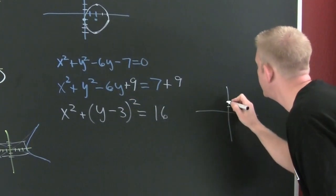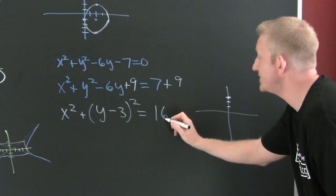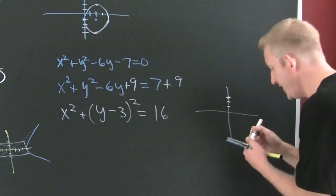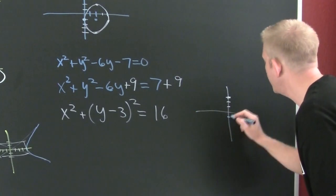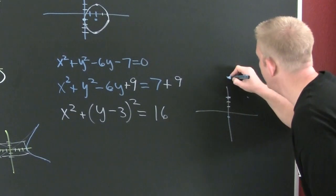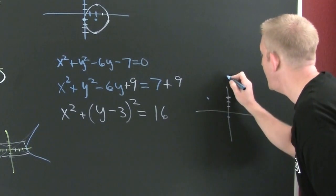It's a circle. Shift it up 1, 2, 3 — there's its center. What's its radius? 4. So I go 4 in every direction: 4 here, 4 here, 4 here, 4 here.